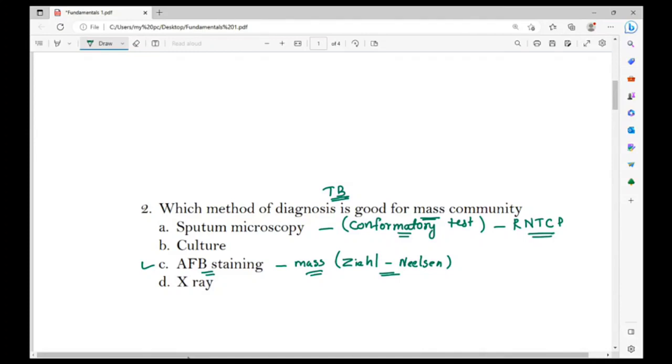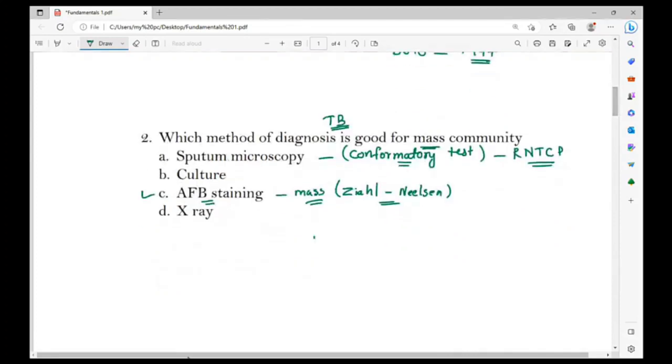For mass community, AFB staining is used in DOTS, Directly Observed Treatment Short Course therapy. DOTS started in 1997 for TB patients.